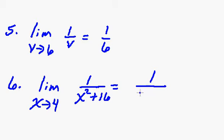We have 4 squared plus 16, and 4 squared is 16, and therefore 4 squared plus 16 is, I think I can do that one in my head, is 1 over 32.